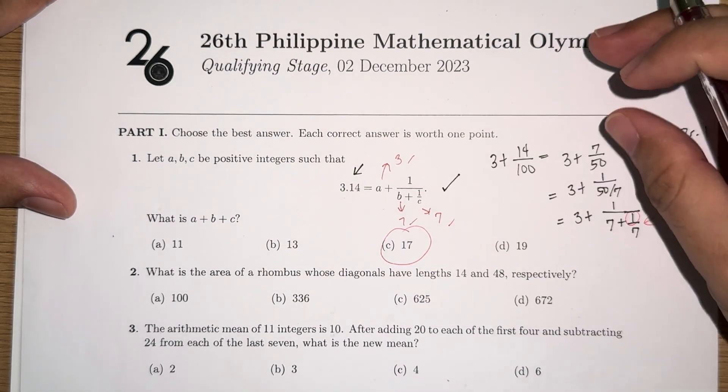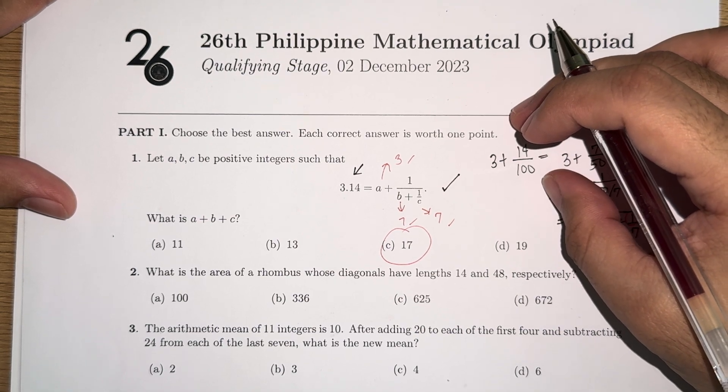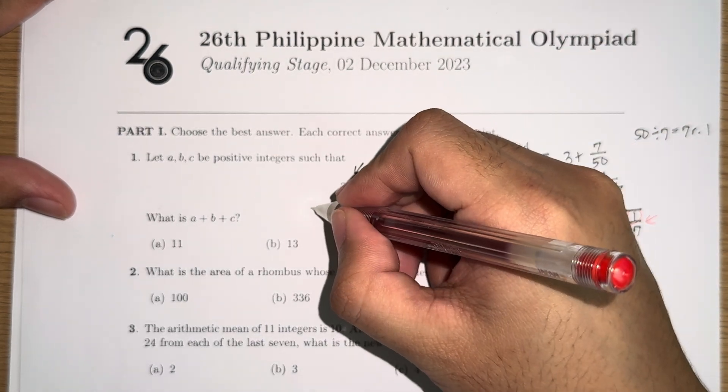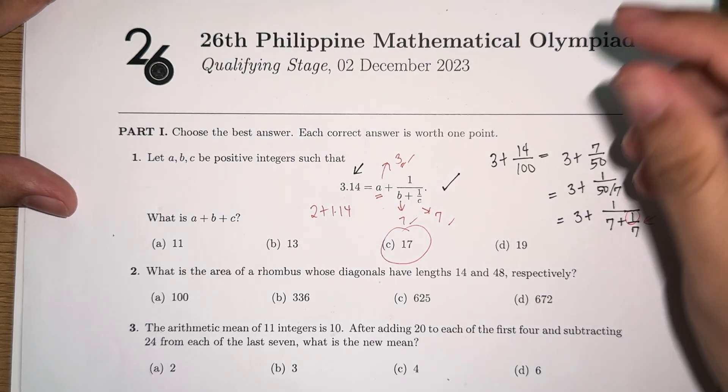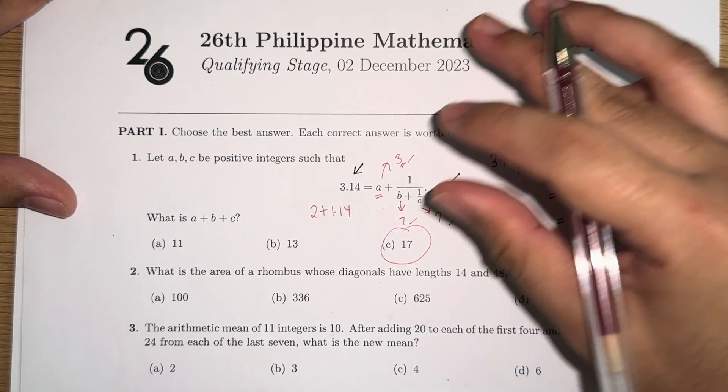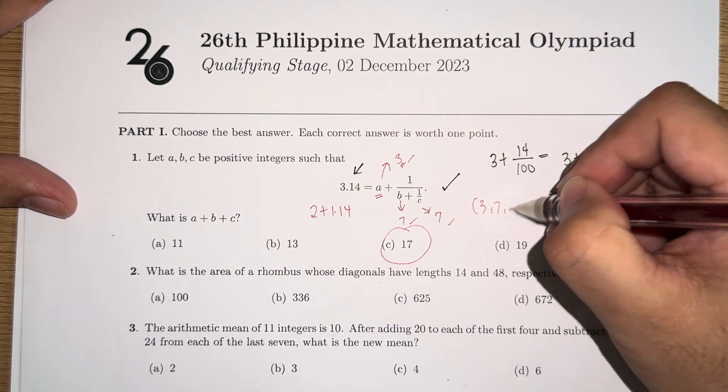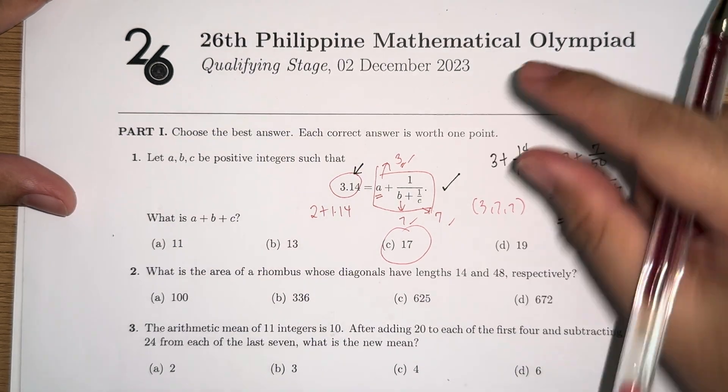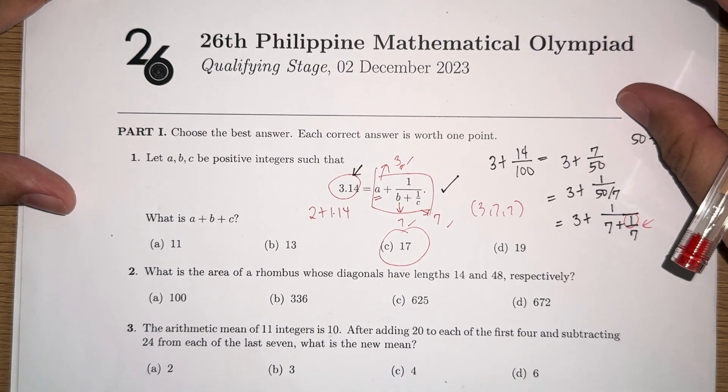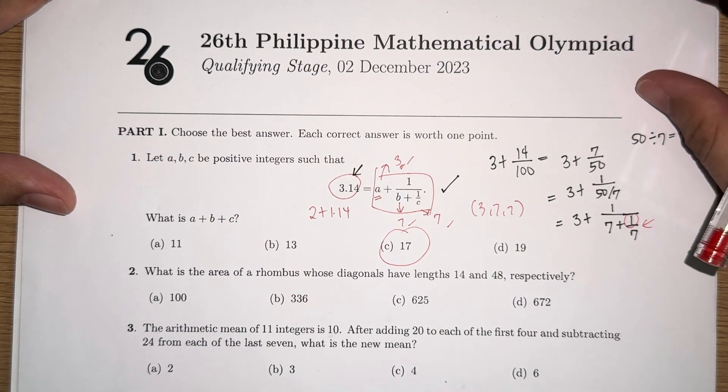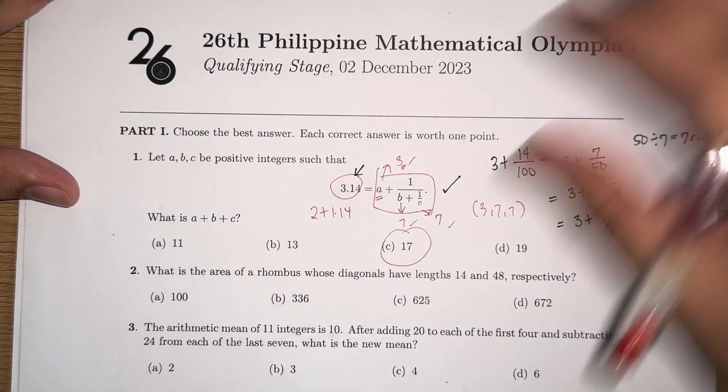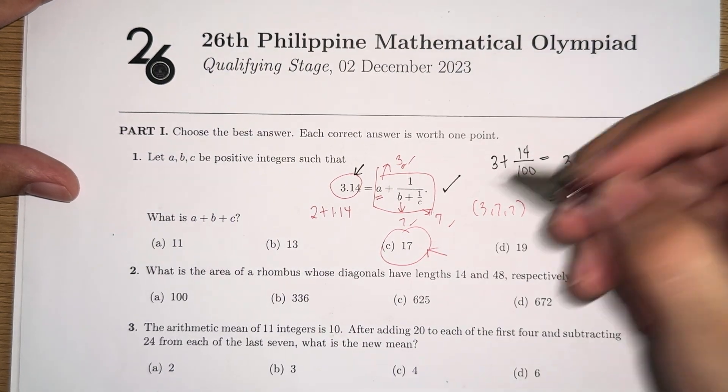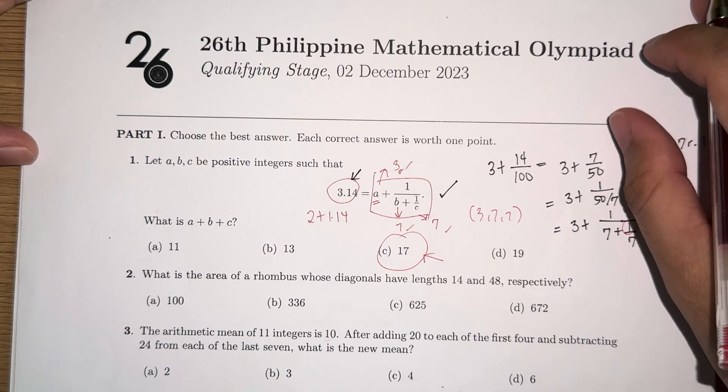So the correct answer for number 1 is 17. Now I'm leaving you the challenge here to show that a must necessarily be 3. I mean, you can technically write 3.14 as 2 plus 1.14. I want you to think about why this is not the case. That this 3-7-7 is the unique representation of this number in this notation. If you figure out why, please comment it down in the comment section. If you need help, I'll gladly assist you as well in the comment section.